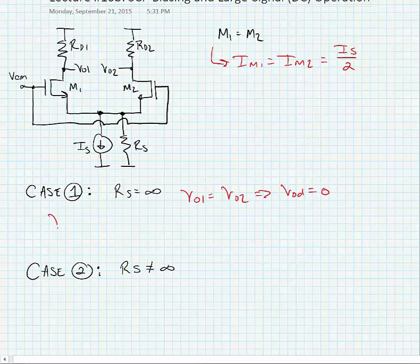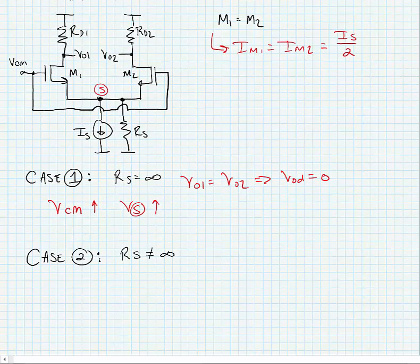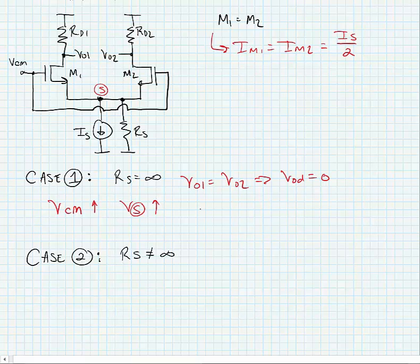If we say that VCM increases, then there's nothing to stop the voltage at the source node VS from increasing by an equivalent amount. If this happens, the output voltage doesn't change.